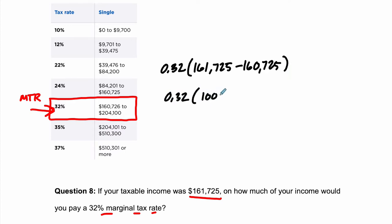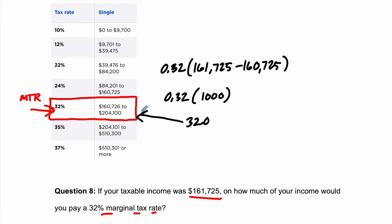So you're going to pay a 32% tax rate on $1,000. 10% is $100, so 32% is $320. You're paying $320 in tax from this margin right here, but that's not your total tax — you're still going to pay taxes for each of the brackets below.